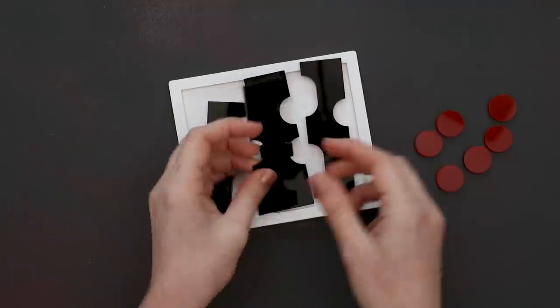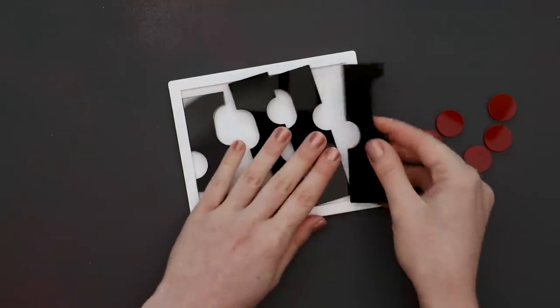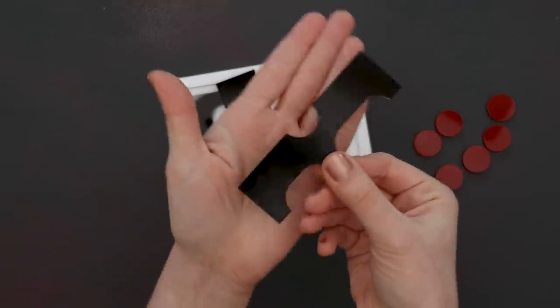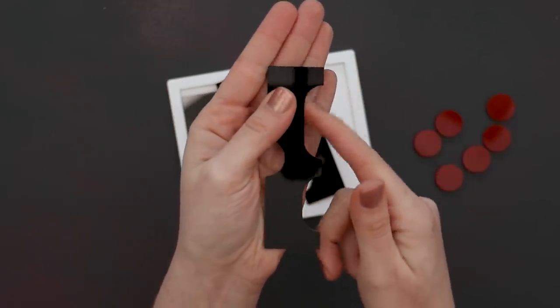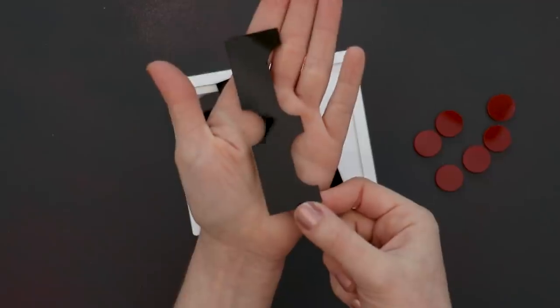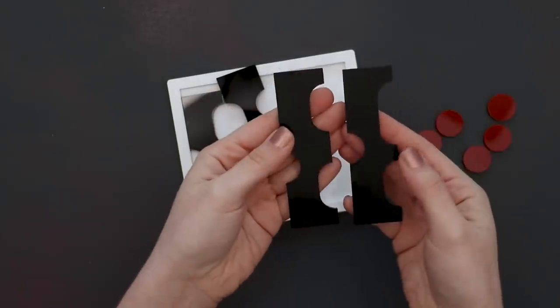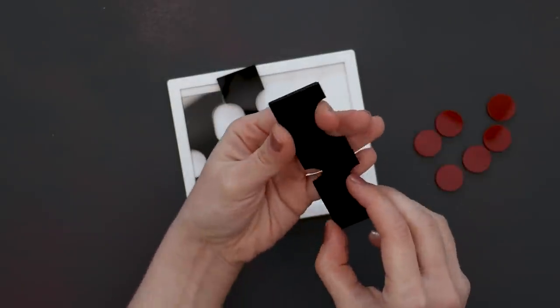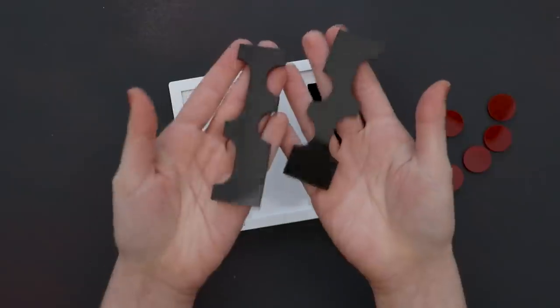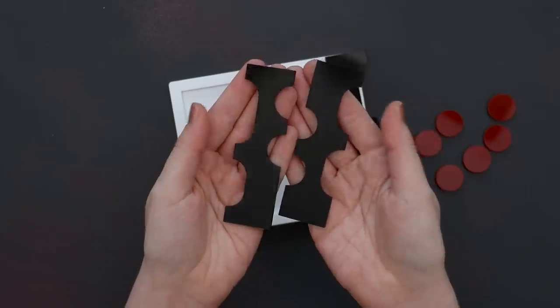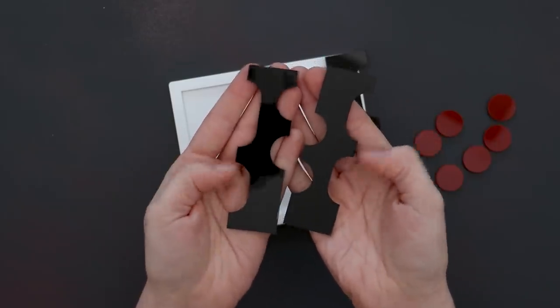All right, so we've got four of these rectangular pieces, and you can see that they have circles carved out, and these rounded rectangles carved out. So it looks like these two are essentially the same. The rounded rectangles are slightly different sizes. And then these two have two circles, and then again, two rounded rectangles.